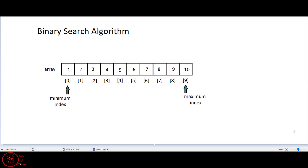Today we're going to be looking at the binary search algorithm. The binary search algorithm is meant to find a target number in a list by constantly splitting the list in half. We don't actually split the list in half — what we do is narrow down a search area over and over again by cutting the search area in half.